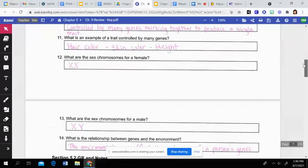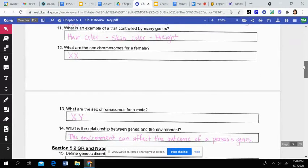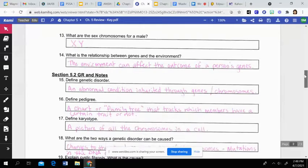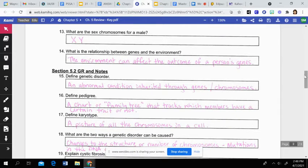Then the sex chromosomes for a female are XX. The sex chromosomes for a male are XY. And then the relationship between genes and the environment is that the environment can affect the outcome of a person's genes. If a person doesn't have as good of a diet or what they're eating, that can change how the gene responds or maybe stunt their growth or their health, even though their gene might have coded for something different.